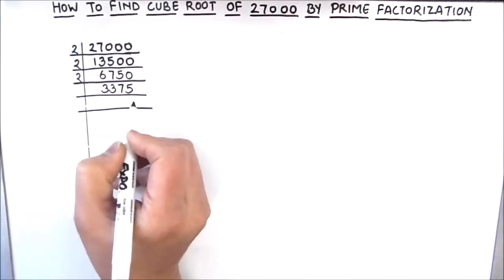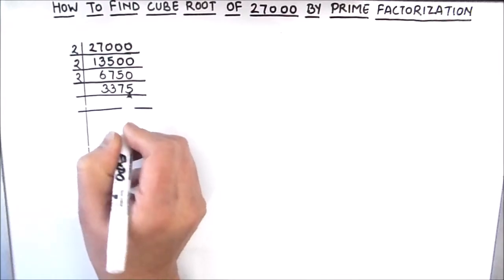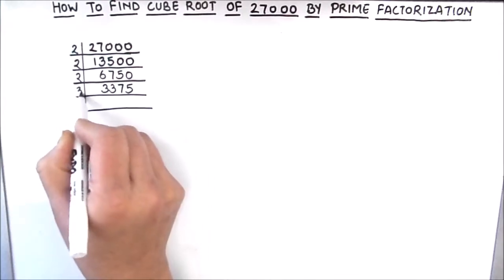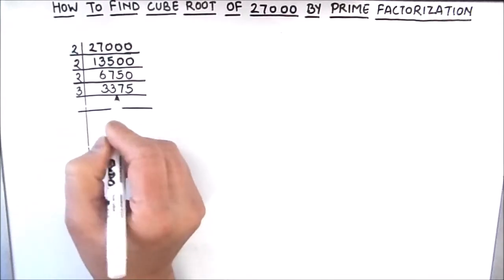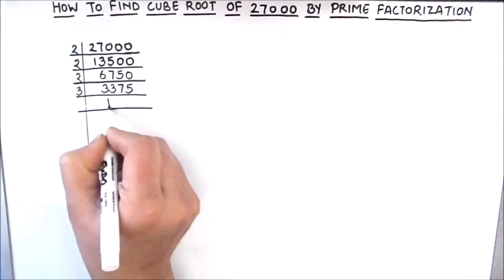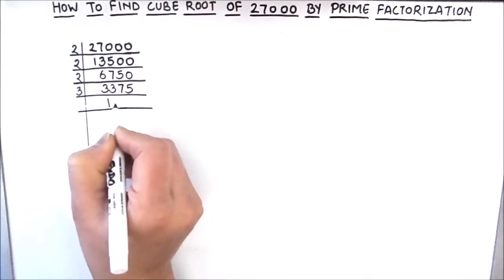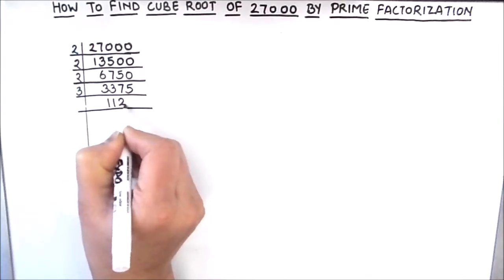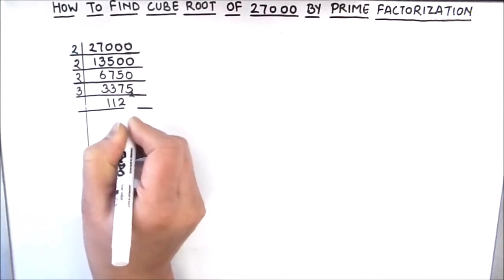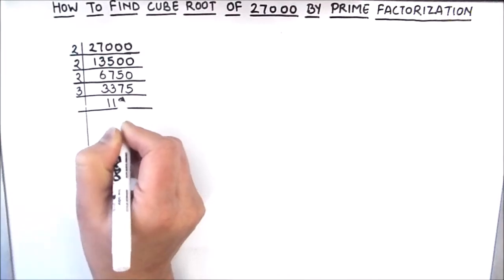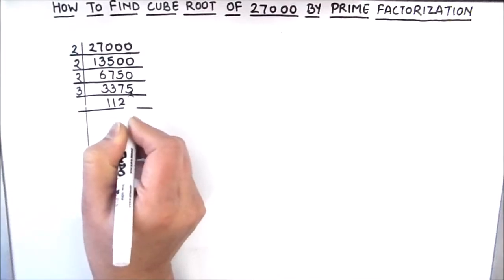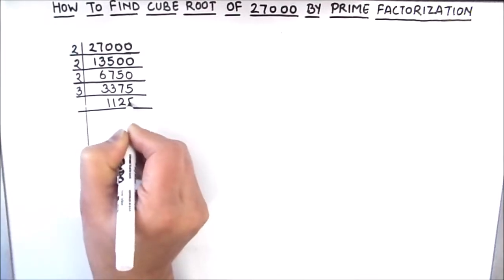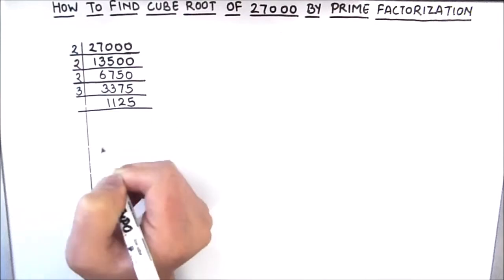Now the number is odd, so let's try dividing it by 3, the next prime number. 3 times 1 is 3, 3 times 1 is 3, 3 times 2 is 6, this is 15 then 1 is carried over this becomes 15, so 3 times 5 is 15. So 3375 divided by 3 gives us 1125.